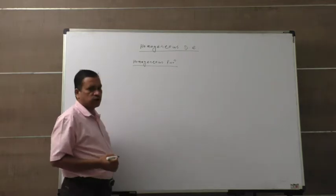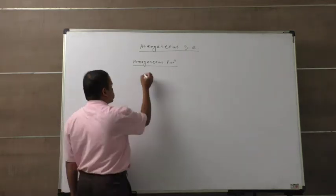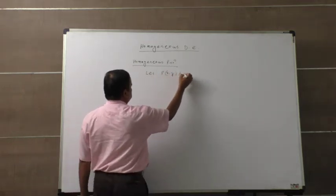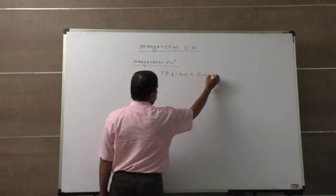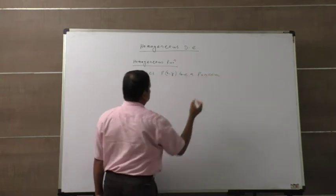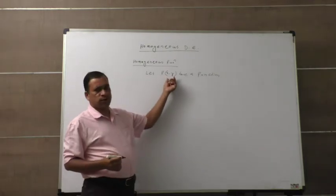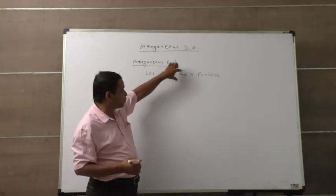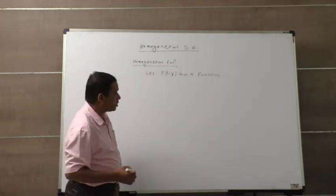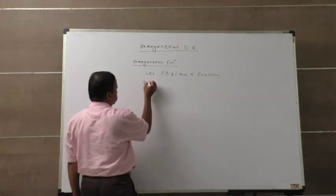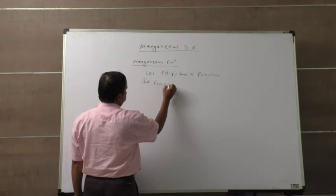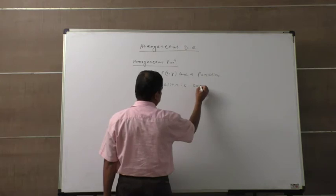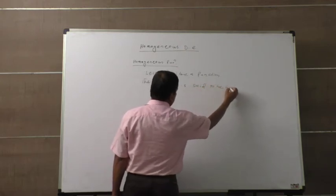What is a Homogeneous Function? Let f(x, y) be a function of two variables. This function will be called Homogeneous under a certain condition. It is said to be Homogeneous if the following condition holds.